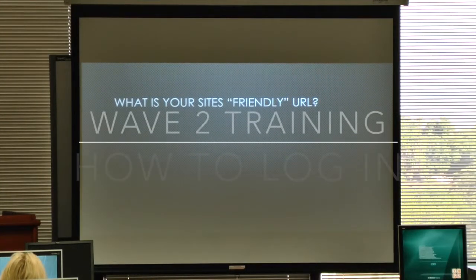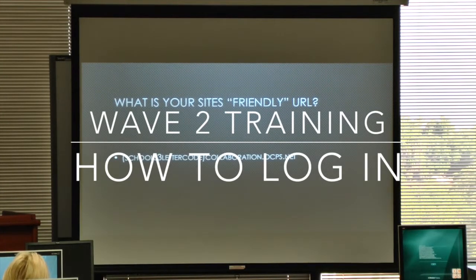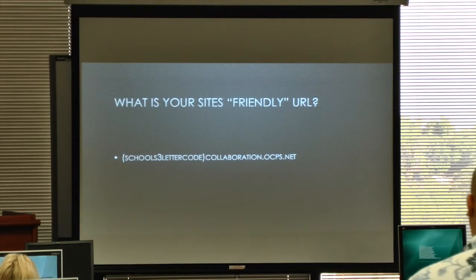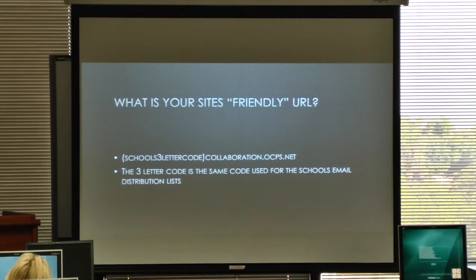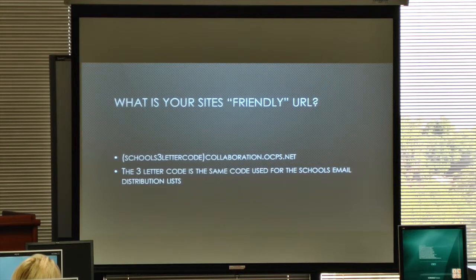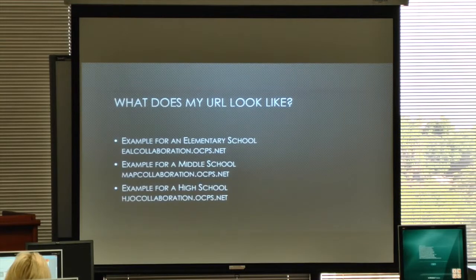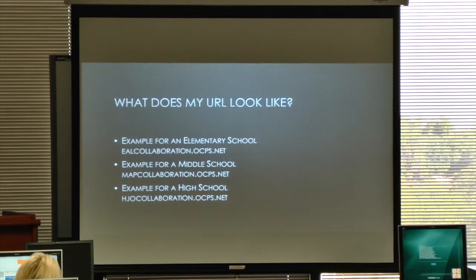So what is your site's friendly URL? Every school has a three-letter code — it's the same three-letter code as your distribution list. The format is: the three-letter code, the word 'collaboration', no dots, no nothing, then 'collaboration.ocps.net'. Elementary schools usually start with an E, middle with an M, and highs with an H. So your URL is: three-letter code, collaboration.ocps.net.